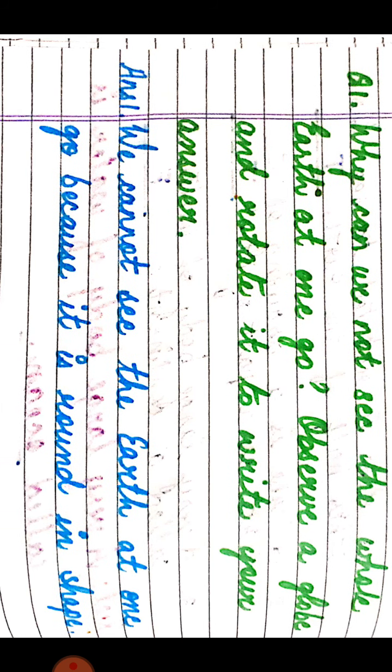Now let's proceed towards the question and answer part. The first question is: why can we not see the whole earth at one go? Observe a globe and rotate it to write your answer. The correct answer is: we cannot see the earth at one go because it is round in shape.